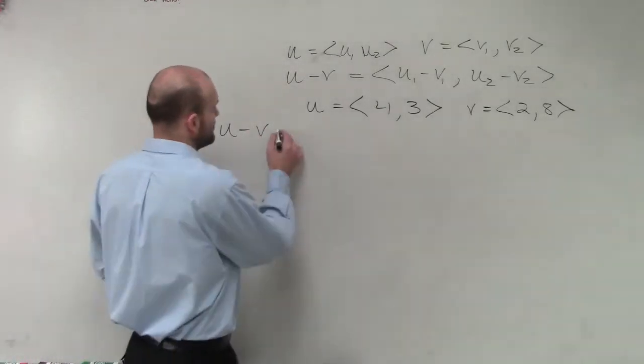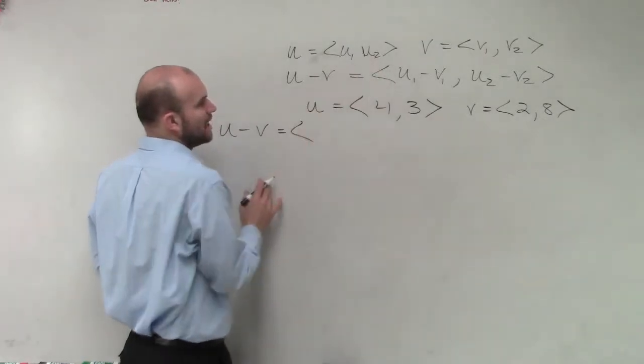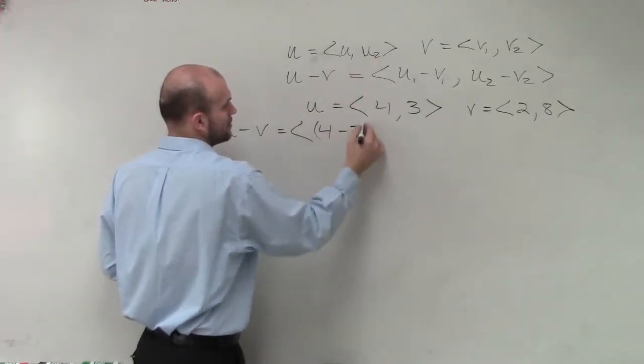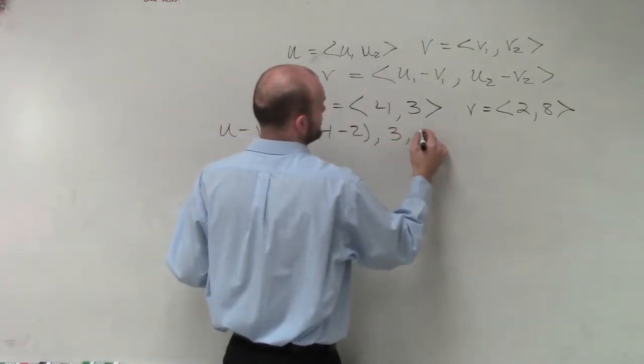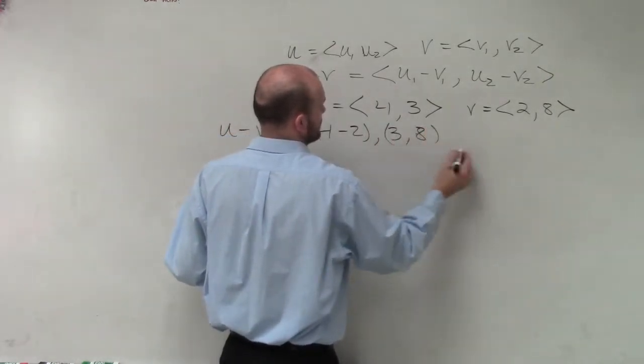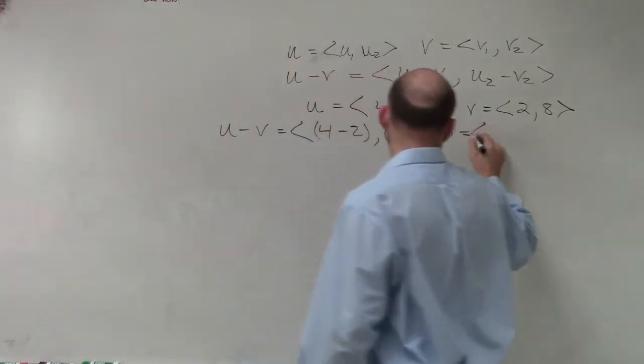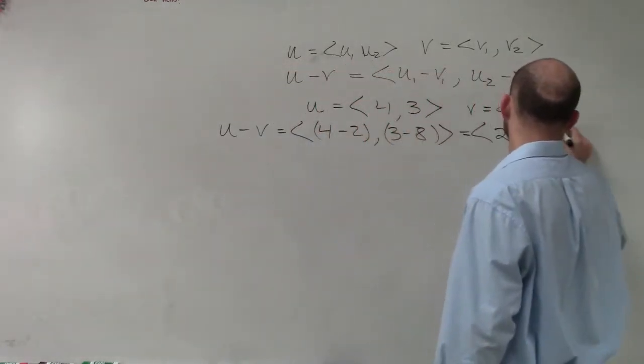Well, very simply, we know that u minus v from my algebra is just going to be 4 minus 2 comma 3 minus 8, which that equals 2 negative 5.